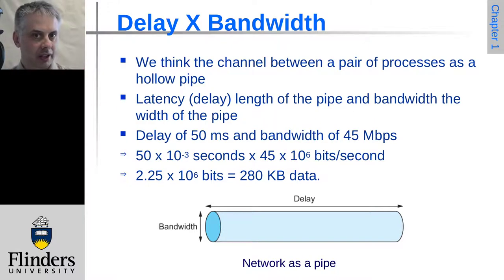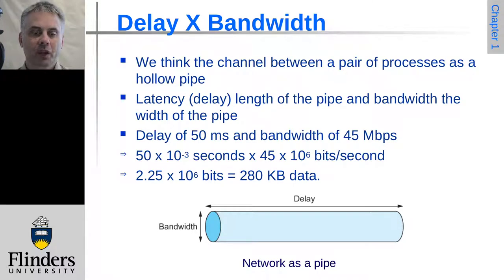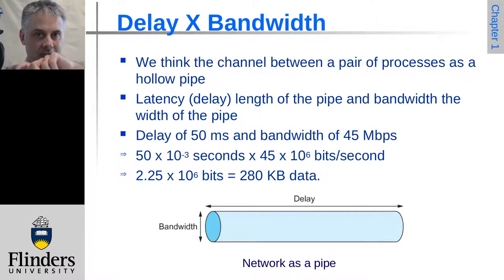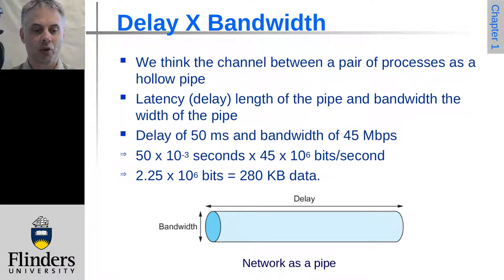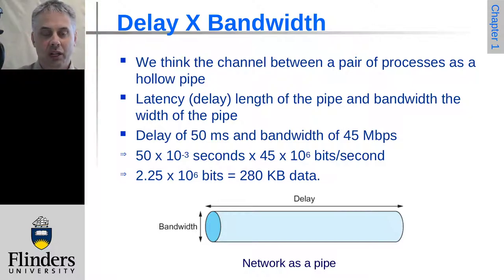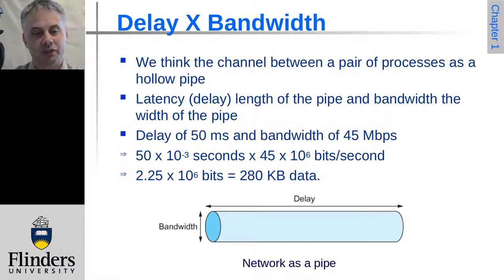This leads into the interesting concept of the delay-bandwidth product. This is the propagation delay multiplied by the bandwidth — it tells us how much data can actually be en route over a given link at a given point in time. We often think of the channel as a pipe: the delay is how long the pipe is, and the bandwidth affects the diameter — how wide the pipe is. The delay-bandwidth product gives the amount of data that can be in transit at any point in time, and this can be a surprisingly large amount.